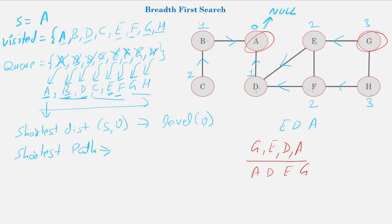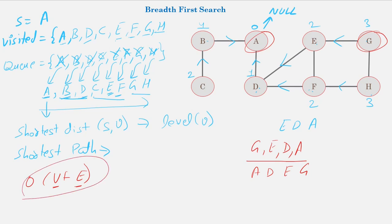This is the complete breadth-first search algorithm, using which we can find the shortest distance and shortest path for an undirected graph. The time complexity is O(V + E) because we visit every vertex — hence V — and we explore each edge from each vertex, giving E total edge explorations. In the next video I will explain how to implement BFS in Python. Thank you for watching.